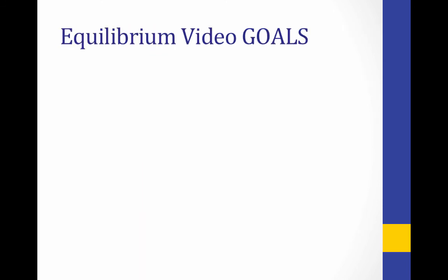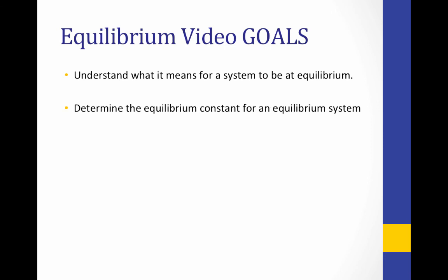That brings us to the end of this video. Let's review our goals. First, we looked at what it means for a system to be at equilibrium: the rate of the forward reaction is equal to the rate of the reverse reaction, and the concentrations of reactants and products are constant. Then we learned how to determine the equilibrium constant for an equilibrium system, and we looked at the meaning of the equilibrium constant. Large equilibrium constants mean products predominate at equilibrium; small equilibrium constants mean reactants dominate at equilibrium.